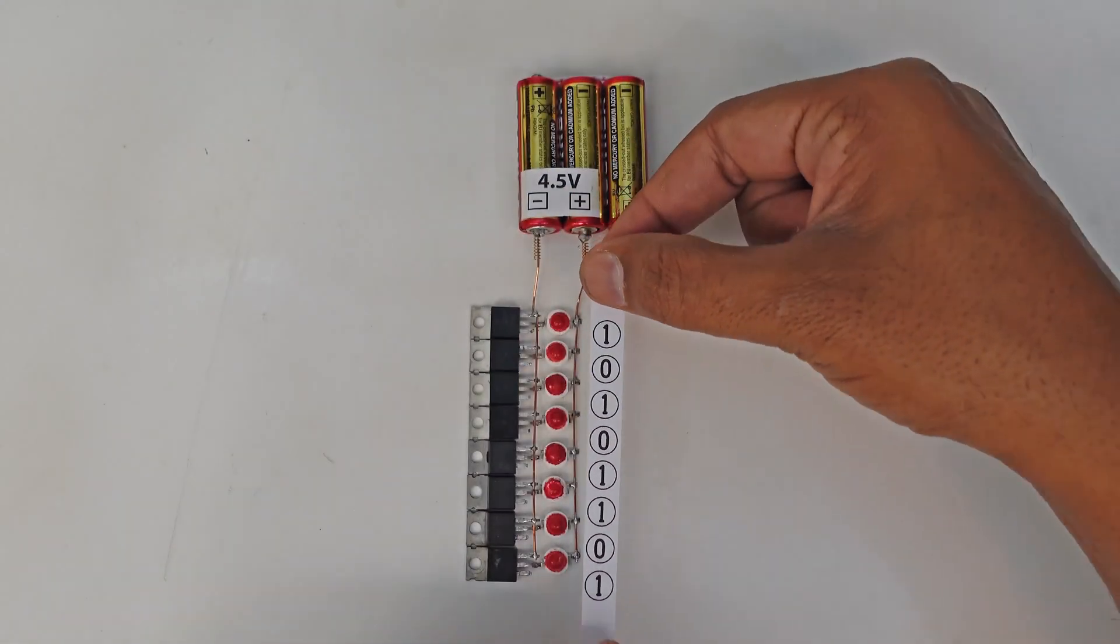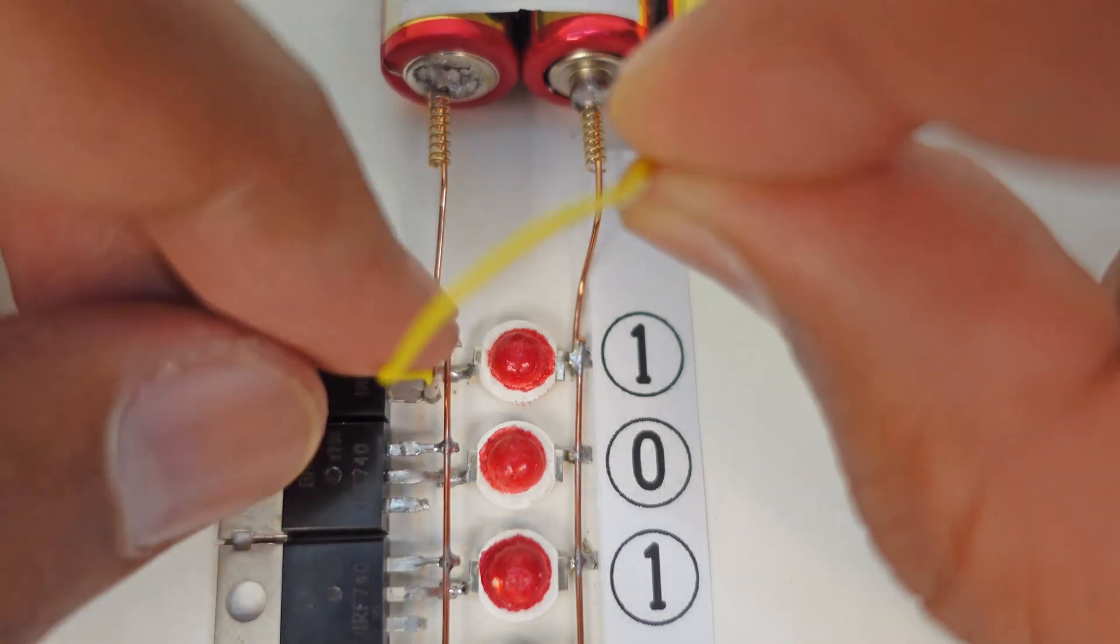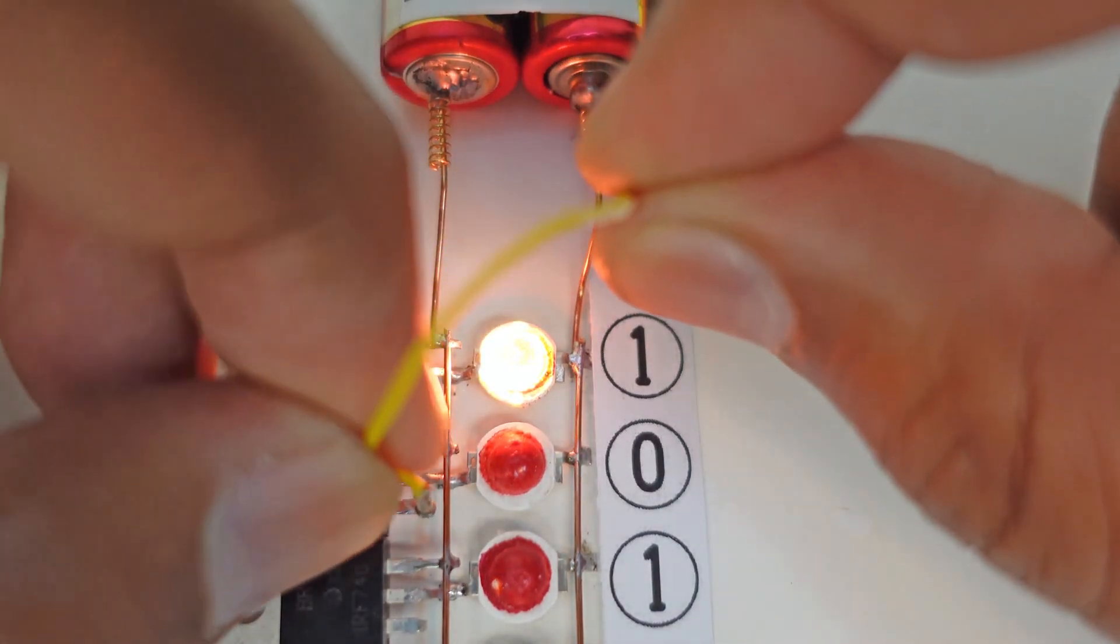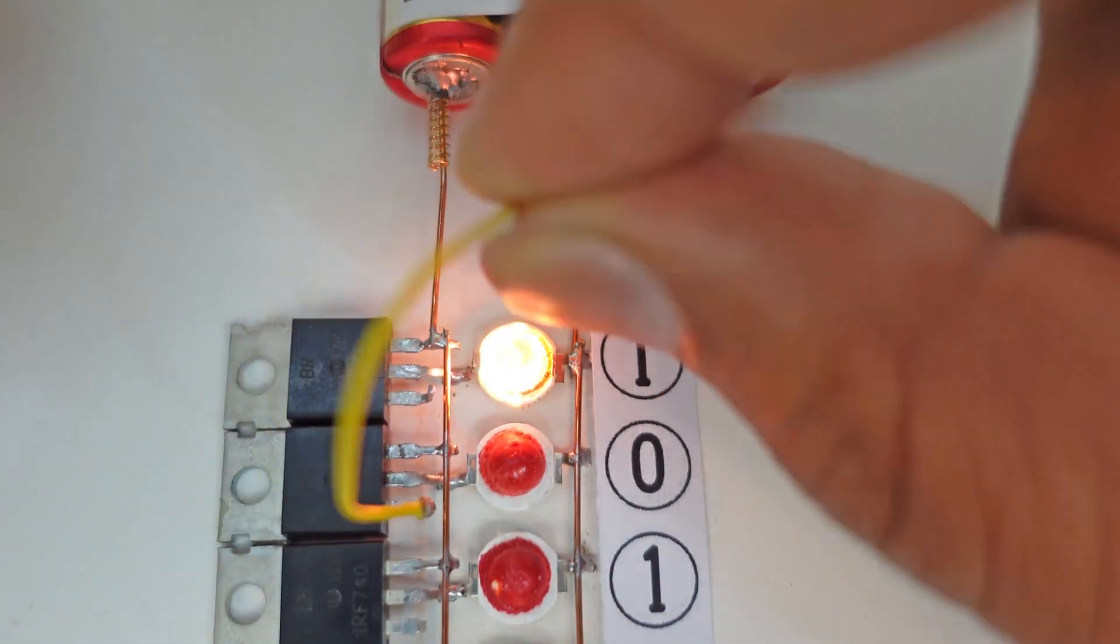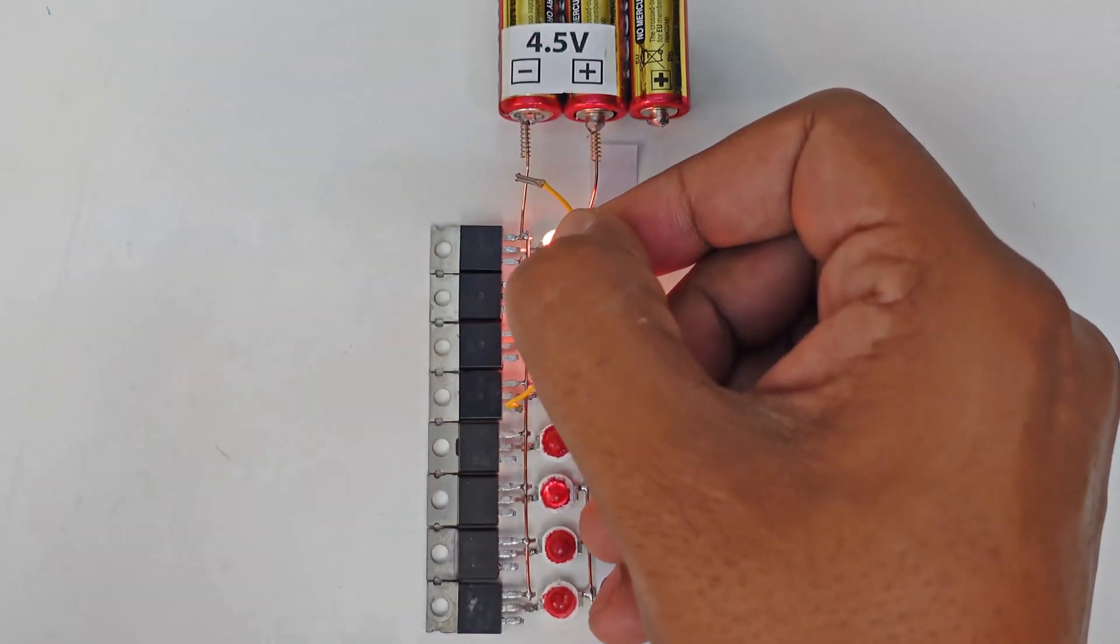This is our one byte data. Let's store it in our flash memory. The first bit is one, we turn the switch on. The second bit is zero, we turn off the switch. The third bit is one. The fourth bit is zero.